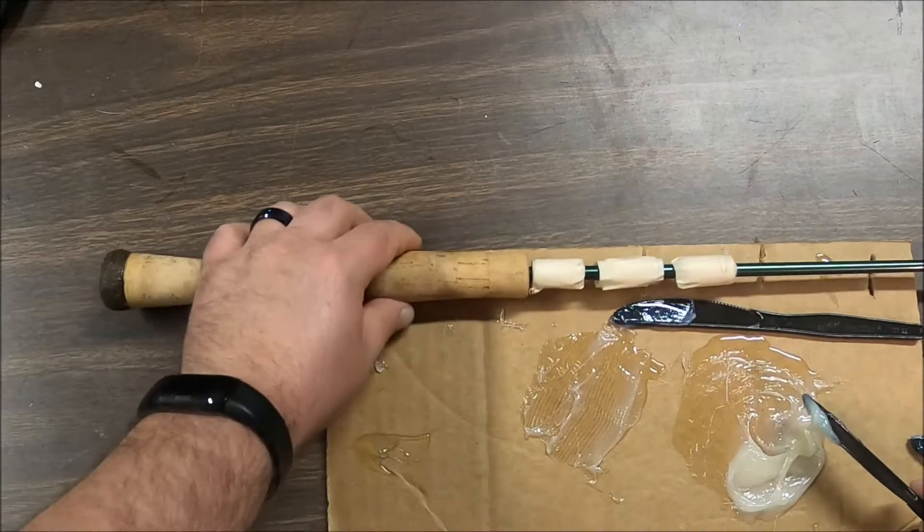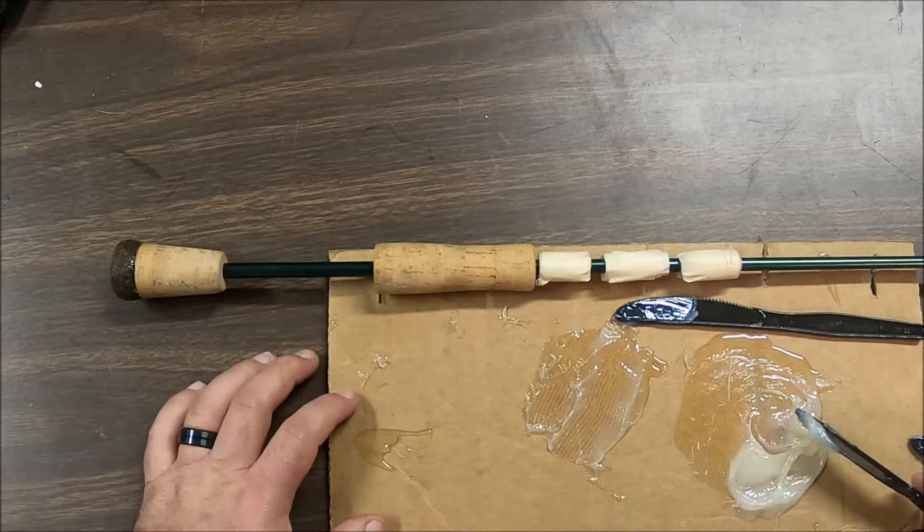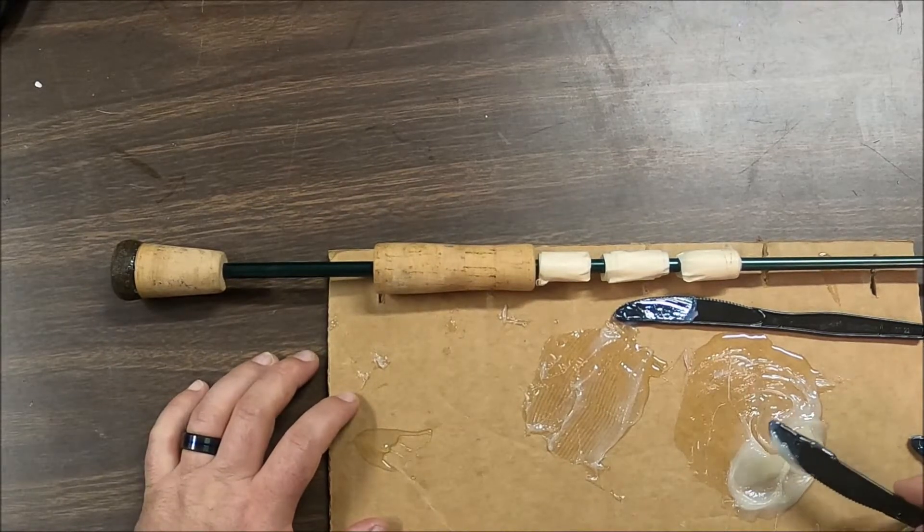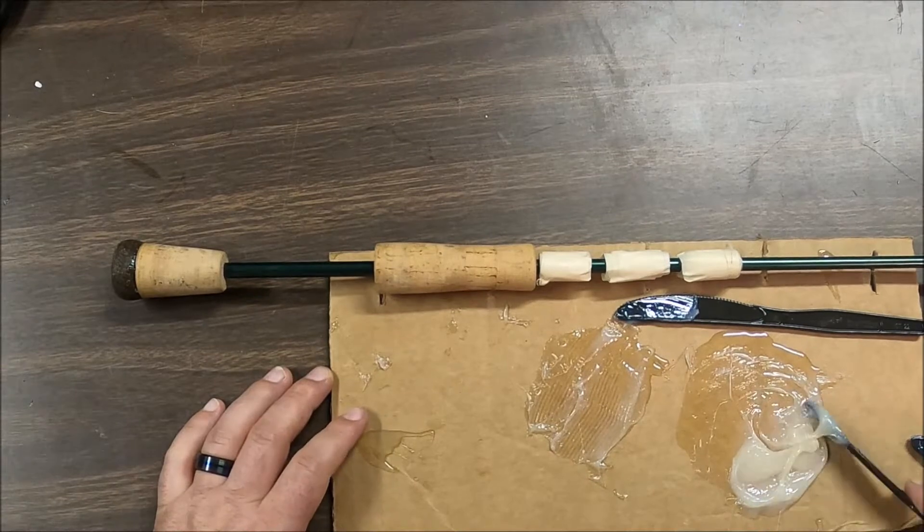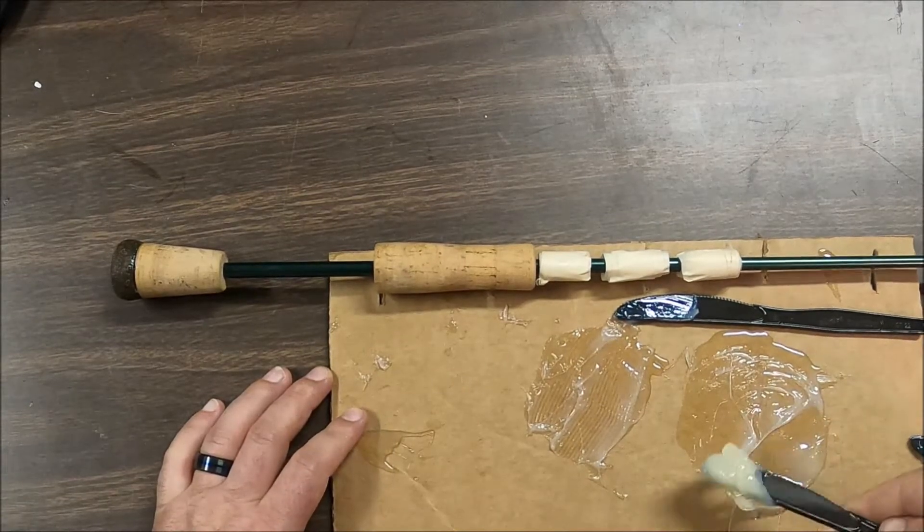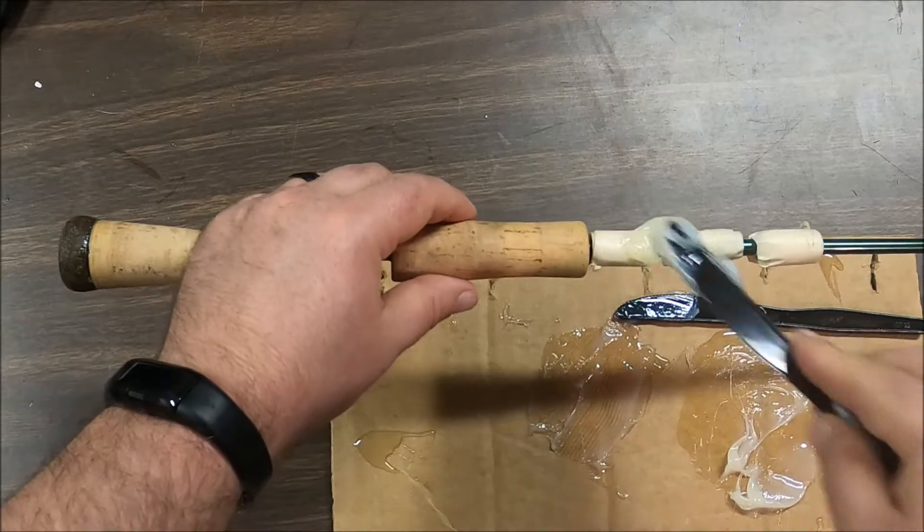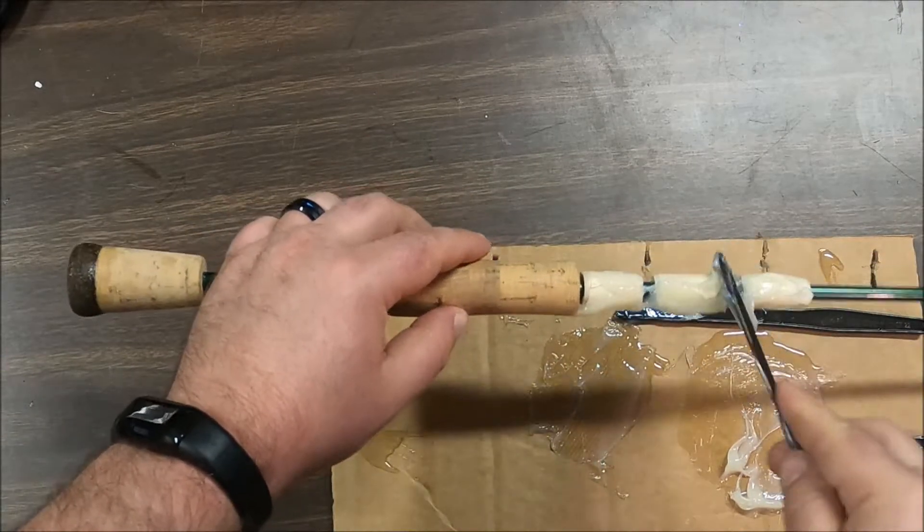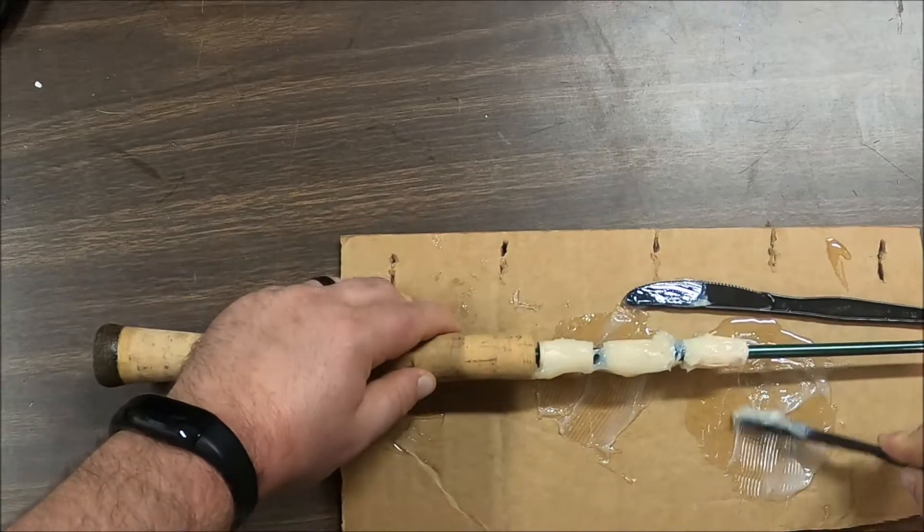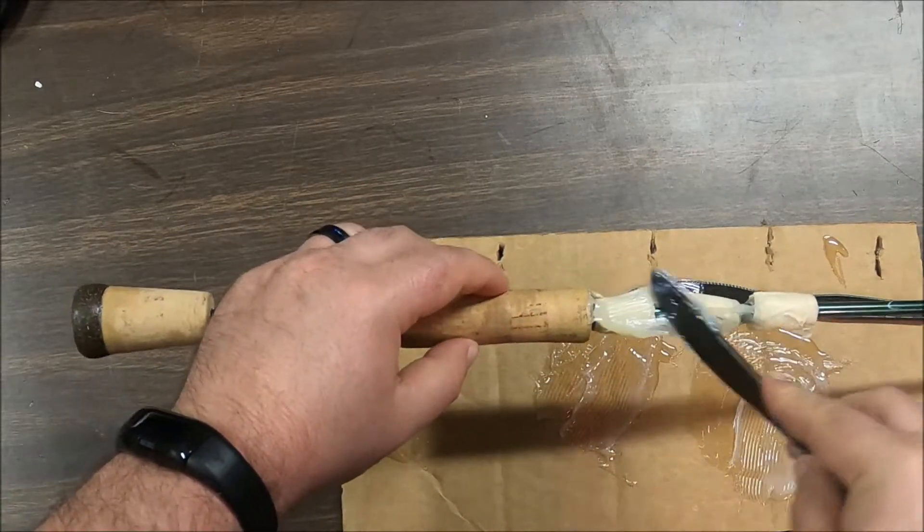Alright, so I used the masking tape. I made a shim. It took quite a bit to put on there because this rod is such a thin diameter. But I was able to use enough tape that it actually does fit on there pretty snugly. So now we're just going to put epoxy where the reel seat goes.